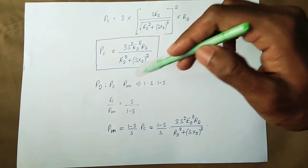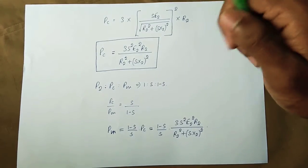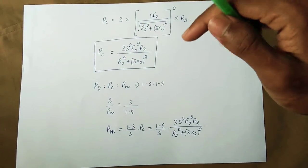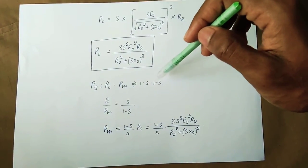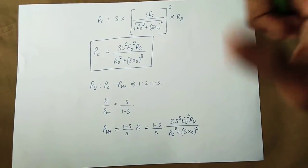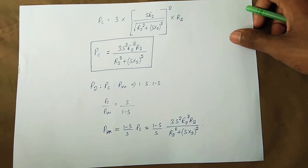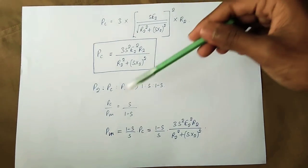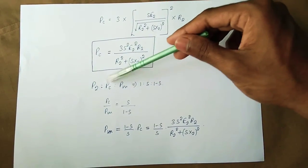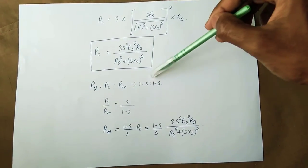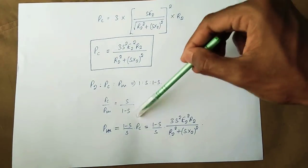Now, considering the power relationships P₂, Pc, and Pm, the ratio is 1 : s : (1 − s). From this, Pc divided by Pm equals s divided by (1 − s).